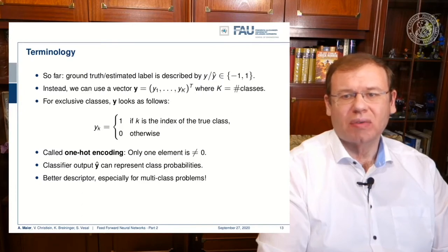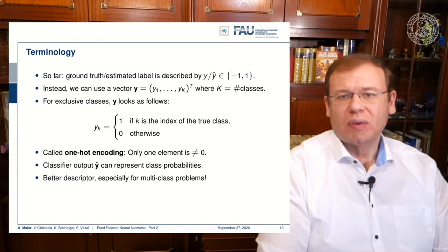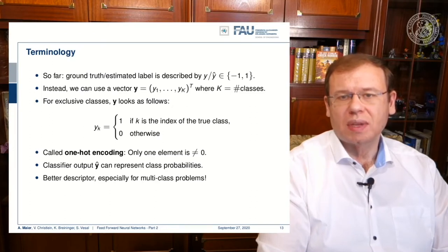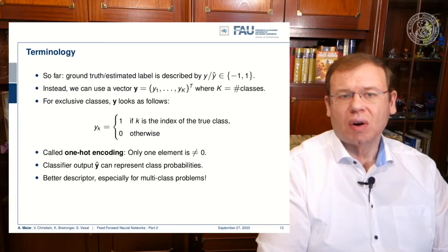You can then define a ground truth representation as a vector that has all zeros except for one position and this is the true class. So this is also called one-hot encoding because all of the other parts of the vector are zero, only a single one has a one.